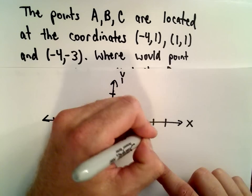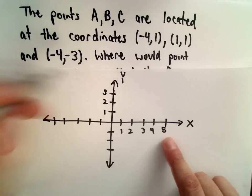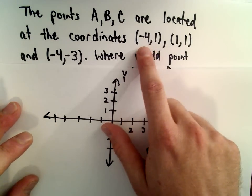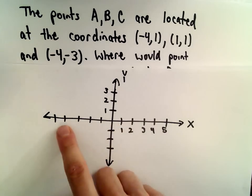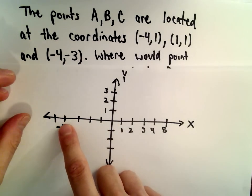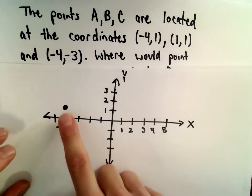We'll assume that all the units, the scale is just 1, 2, 3, 4, 5 along the x and y axes. Let's find the point (-4, 1). We'll go 1, 2, 3, 4 units to the left of the origin, and then up 1 unit. So there's our point (-4, 1).